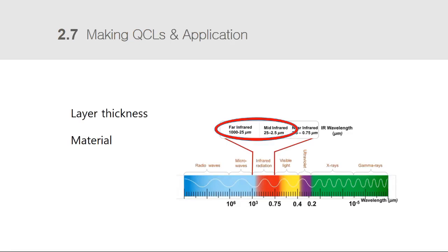We have established that achieving population inversion is important for emitting photons. How can we control the positions of the energy levels? In QCLs, the system's energy levels are determined by the layer thickness, not the material. Therefore, it is possible to tune the emission wavelengths of QCLs over a wide range within the same material system — an advantage over conventional semiconductor lasers whose wavelength is fixed by the material bandgap.